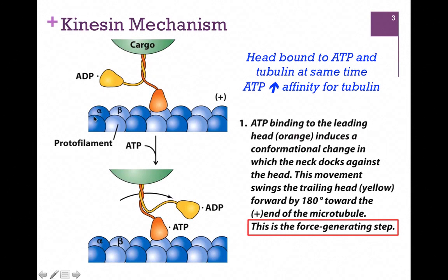It's bound to tubulin. Tubulin is composed of alpha and beta tubulin - alpha in the darker blue and beta in the lighter blue. Our leading head in orange is bound specifically to the beta subunit - that'll be our right foot for now. Our left foot in yellow is currently bound to ADP and is not bound to tubulin. This is our starting position.